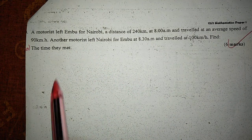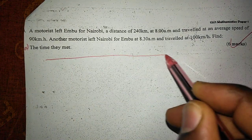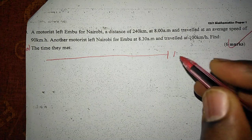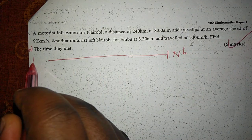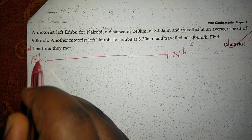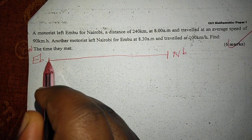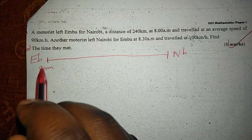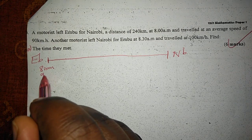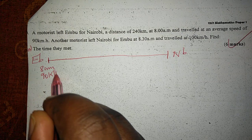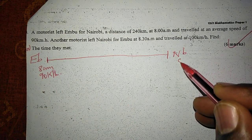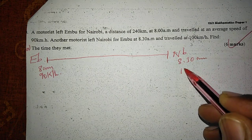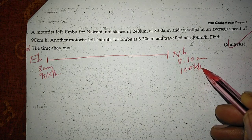So these are two people traveling from opposite sides — one from Nairobi and another one from Mbu — such that the one from Mbu started at 8 a.m. and traveled at 90 kilometers per hour, yet the other one is starting at 8:30 a.m. and traveling at 100 kilometers per hour.